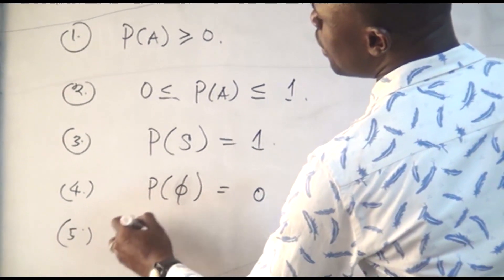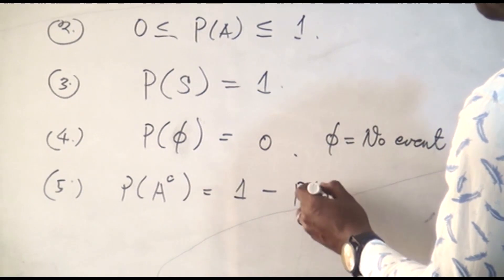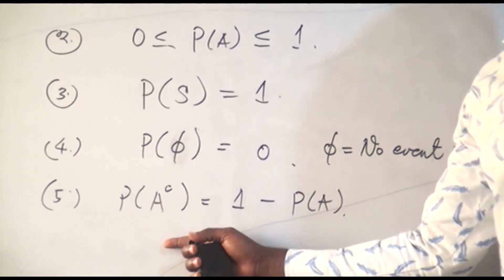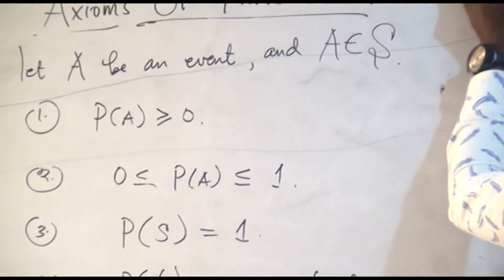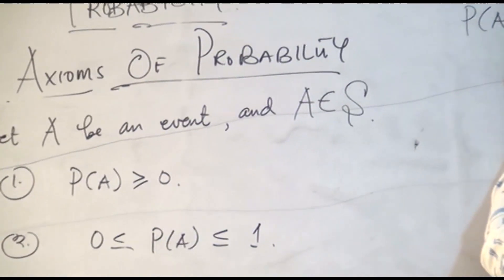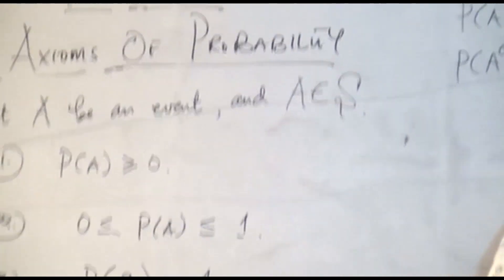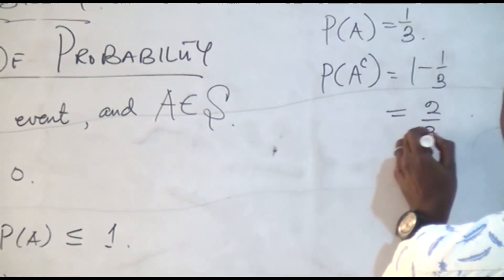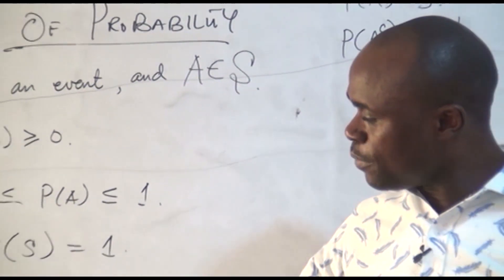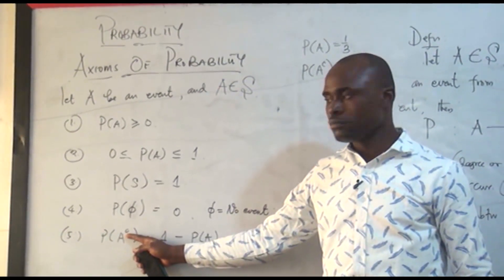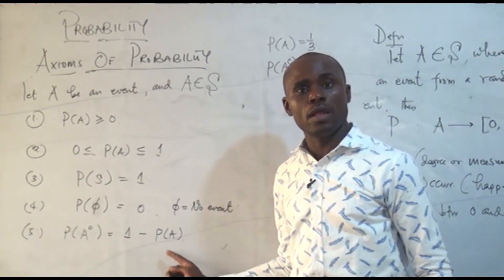Axiom five: the probability that A will not happen is the same as one minus the probability that A will happen. For instance, if the probability of me going to school is one over three, then the probability that I will not go to school will be one minus one over three, which equals two over three. This is the complement rule — the probability of A complement is one minus the probability of A.